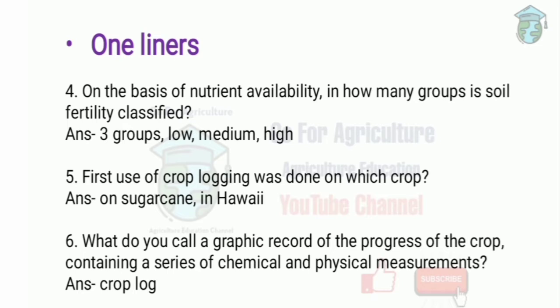The next question is: the first use of crop logging was done on which crop? The answer is sugarcane in Hawaii. Crop log is a graphic record of the progress of the crop, containing a series of chemical and physical measurements.